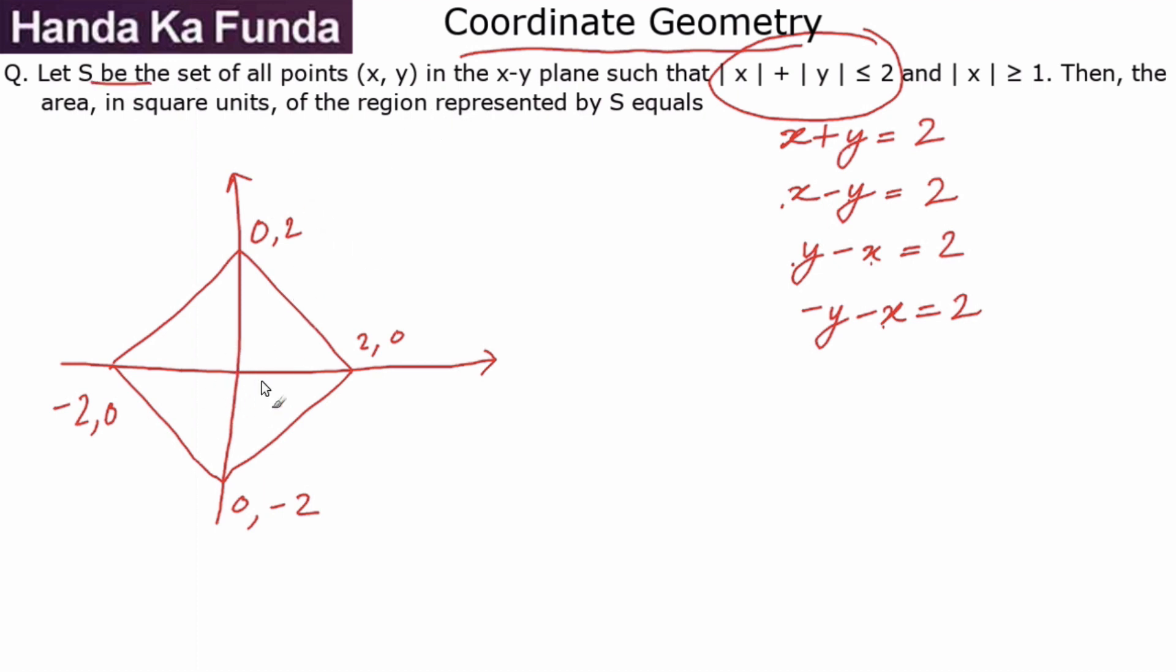All those points will lie inside this particular portion, but our job is not done. We are given another inequality that |x| should be ≥ 1. Once again, if we try to resolve this inequality, I take both x as positive or negative, so I get x as 1 or I get -x as 1, which means x is 1 or x is -1.